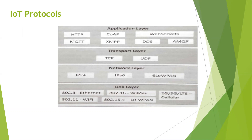Protocols are nothing but a set of rules which is followed by everyone. So layer to layer, we have different protocols used for communication. This is the application layer protocol, and these are transport layer protocols, network layer protocols, and link layer protocols.